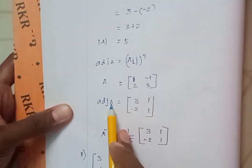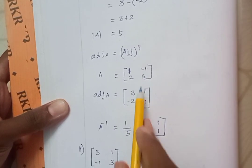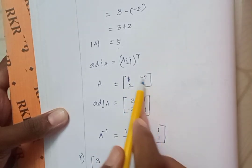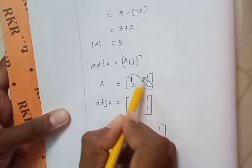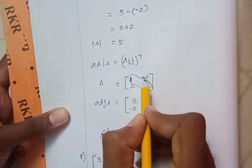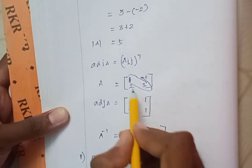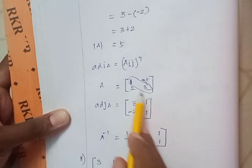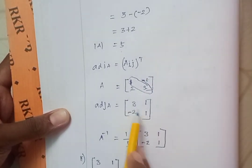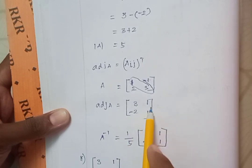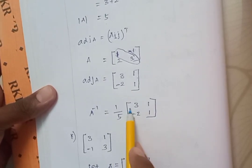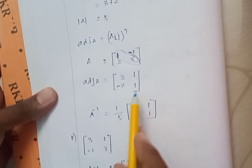For a 2 by 2 matrix, we can easily find the adjoint of A. For the adjoint of a 2 by 2 matrix, we interchange the leading diagonal elements, and sign-change the other diagonal elements. So 1 and 3 on the leading diagonal interchange to become 3 and 1. The remaining diagonal: minus 1 becomes plus 1, and plus 2 becomes minus 2. Then A inverse equals 1 divided by determinant of A, which is 5, times adjoint of A, which is the matrix 3, 1, minus 2, 1.